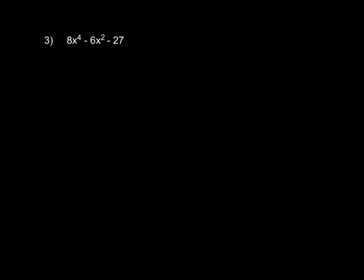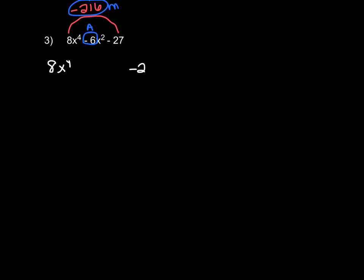Okay, so now skip to number 3 in your packet. First thing you want to say to yourself is: can I factor out the greatest common factor? No, we can't. There's a number other than 1 in front of our first term, so we're going to have to use the grouping technique. Multiply together the first and last term — that would be negative 216. And we want to come up with two numbers that add to negative 6 and multiply to negative 216. I don't automatically set up two sets of parentheses; I bring down my first term, leave a big space, and bring down my last term.